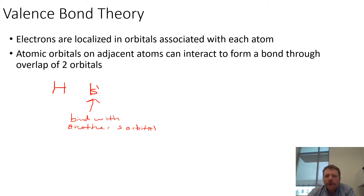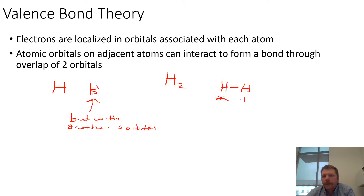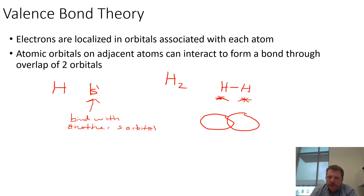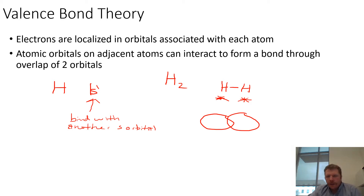If we think about a molecule like H2, each of these hydrogens has the exact same electron configuration. This hydrogen is going to bring a 1s electron, as is this hydrogen. So when we think about what this looks like, our s orbitals can overlap and those electrons can be shared — hence we're forming a bond between them. Now it gets a little bit trickier as we move on to more complicated molecules.